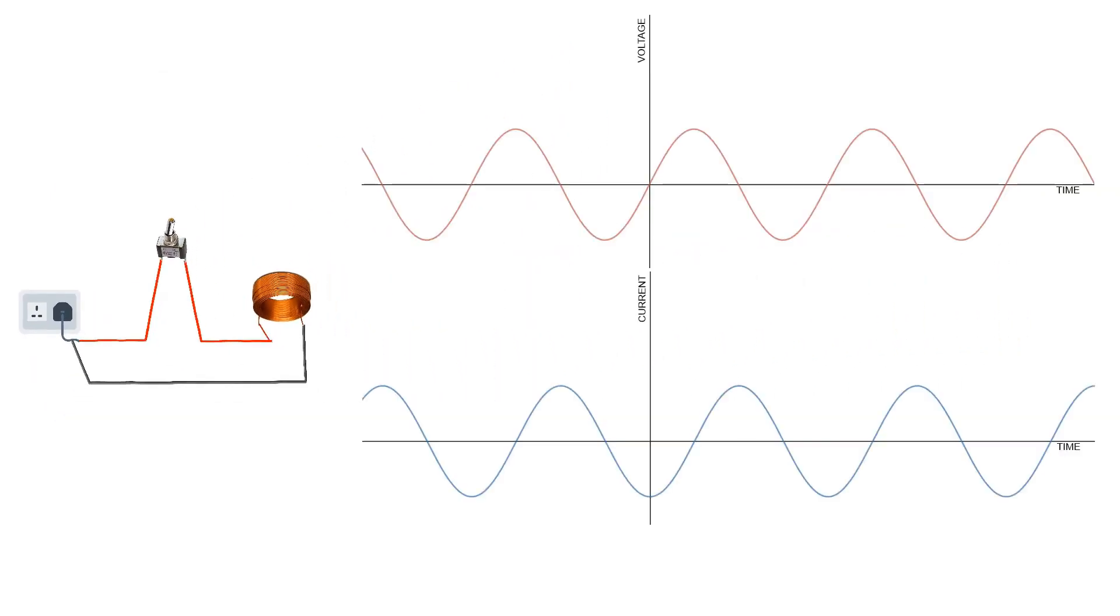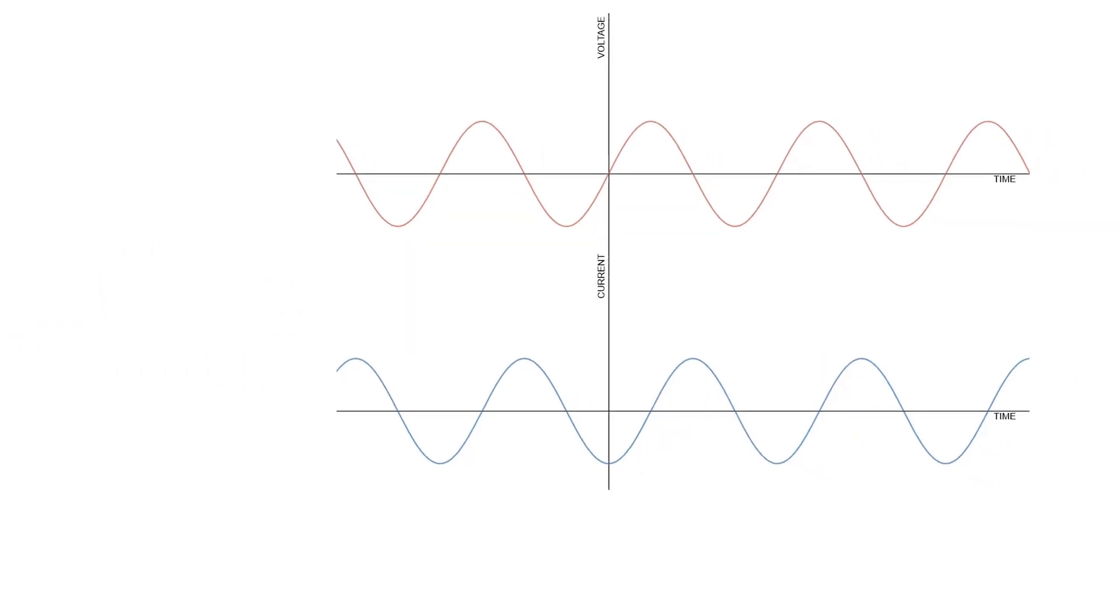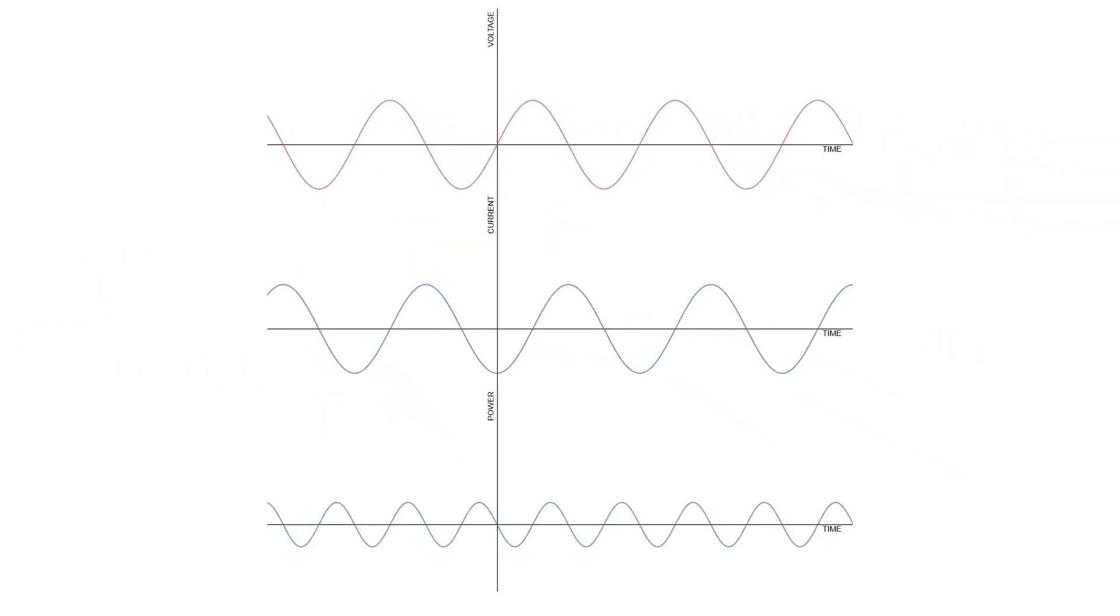Now current will be shifted by 90 degrees, or current lags voltage by 90 degrees. As we did before, multiply the two waveforms together.